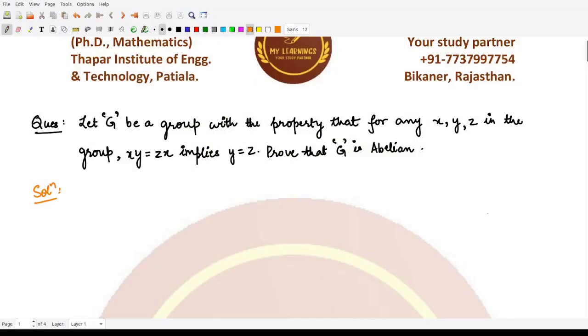Hello everyone, welcome to this video. In this video we'll be solving this question which tells us that if G is some group with the property that if we take any three elements x, y, z from it, and if x*y = z*x, then we have y = z.